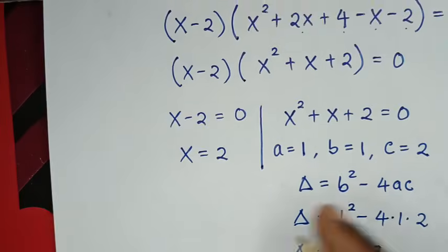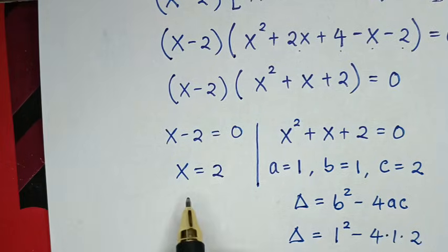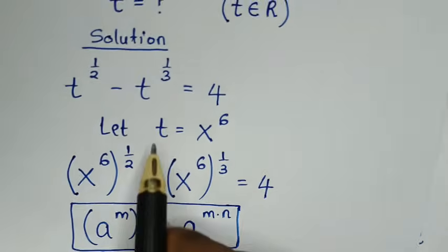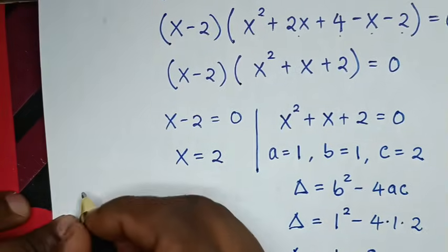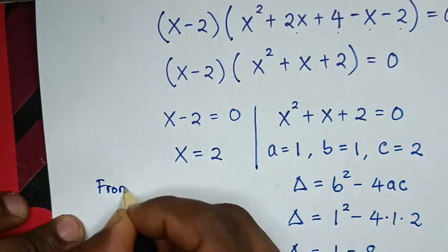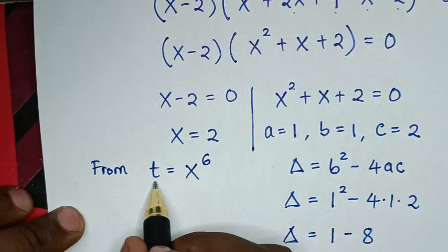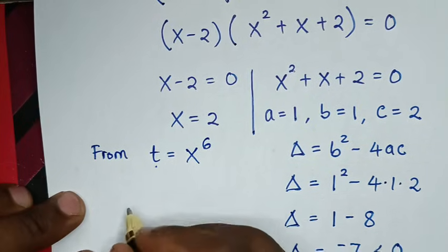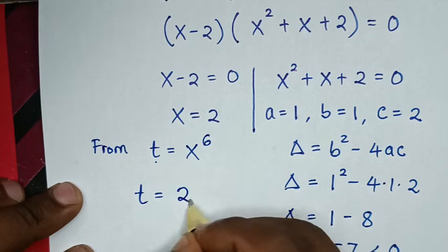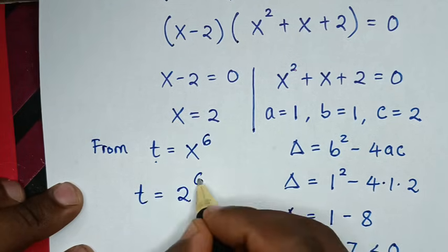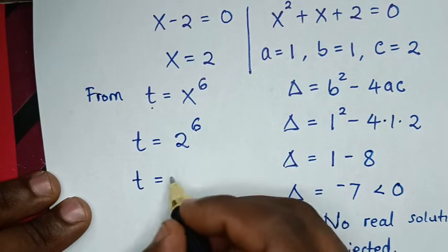We continue with the first solution x equals 2. Recalling our substitution, t equals x to the power of 6. So t equals 2 to the power of 6, which equals 64. This is the final answer for the value of t.